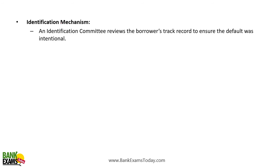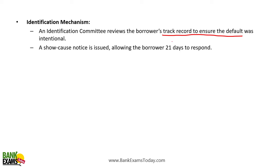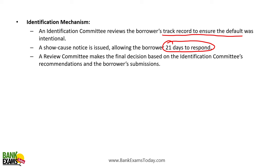Regarding the identification mechanism — how willful defaulters are identified — there is an identification committee that reviews the borrower's track record to ensure the default is intentional. A 21-day notice is sent to the borrower so they get an opportunity to reply. The review committee then takes the final decision whether to identify a particular borrower as a willful defaulter or not.